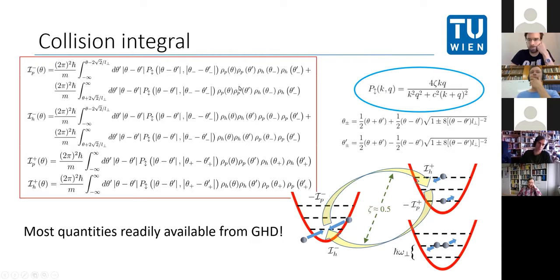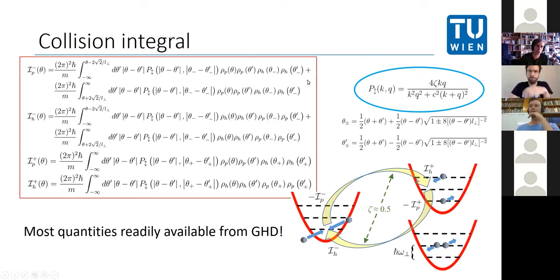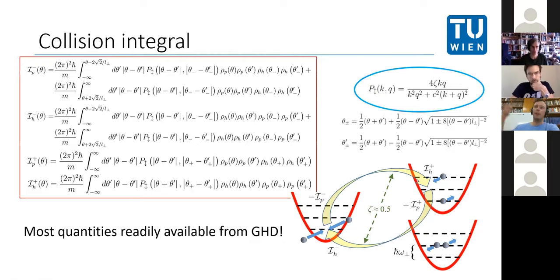An audience member notes that this is essentially writing collision integrals for fermions, which is not so obvious — as seen in Jerome's talk, losses behave very differently for fermions vs. bosons. The speaker agrees, but adds that the assumption of very few atoms in the excited state means they don't need to worry about counting available states to scatter into in the excited state — that concern applies mainly when returning to the ground state where the majority of atoms reside.